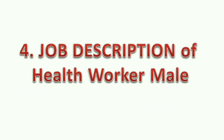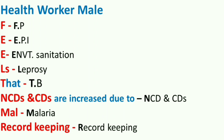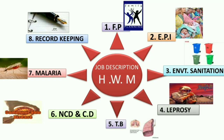Job description of health worker male — the mnemonic is 'HEALTH WORKER MALE FEELS THAT NCDS AND CDS ARE INCREASED DUE TO MAL RECORD KEEPING.' F for family planning; E for expanded program on immunization; E for environmental sanitation; L for leprosy; T for TB; NCDS AND CDS for non-communicable diseases and communicable diseases; MAL for malaria; RECORD KEEPING for maintaining proper records. You can use this diagram to explain in detail the services in relation to leprosy, TB, and malaria.